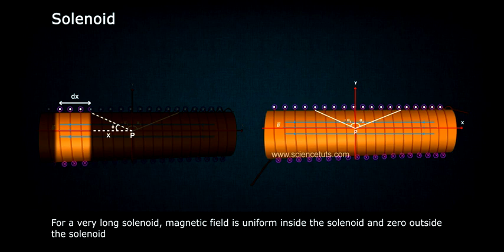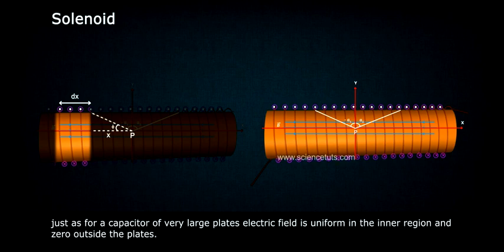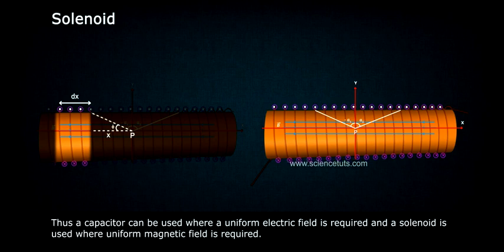Just as for a capacitor of very large plates, electric field is uniform in the inner region and zero outside the plates. Thus, a capacitor can be used where a uniform electric field is required and a solenoid is used where uniform magnetic field is required.